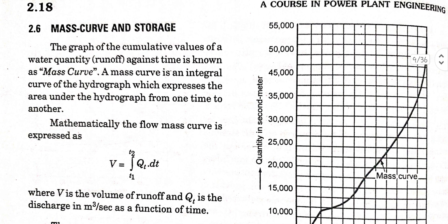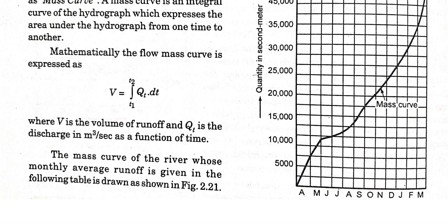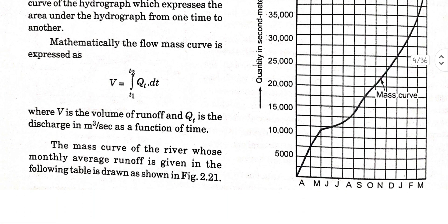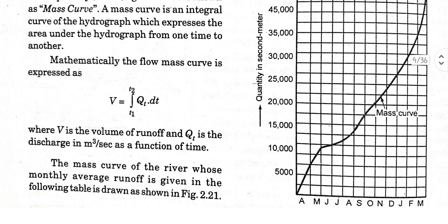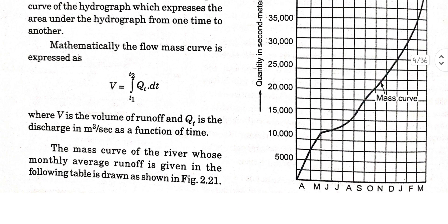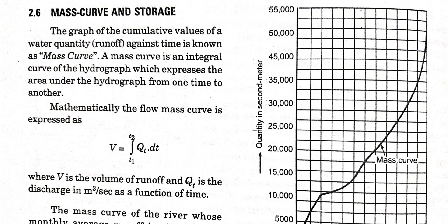As seen in the figure, it represents the mass curve. If the rainfall is uniform throughout the year, the mass curve would be a straight line having a uniform slope. In the graph, the x-axis represents months and the y-axis represents quantity in second-meters.